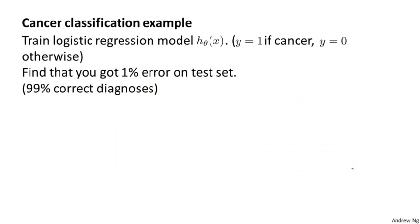Consider the problem of cancer classification, where we have features of medical patients and we want to decide whether or not they have cancer. This is like the malignant versus benign tumor classification example from earlier. Let's say y equals 1 if the patient has cancer and y equals 0 if they do not. We might train a logistic regression classifier, and let's say we test it on a test set and find that we get 1% error.